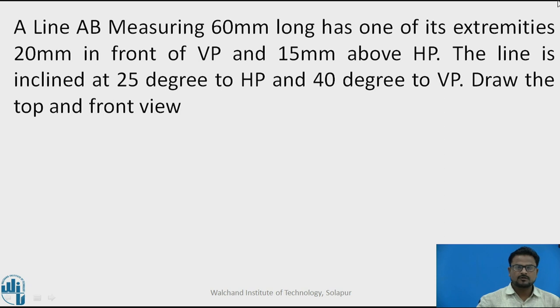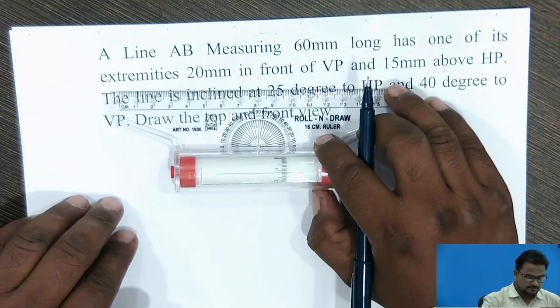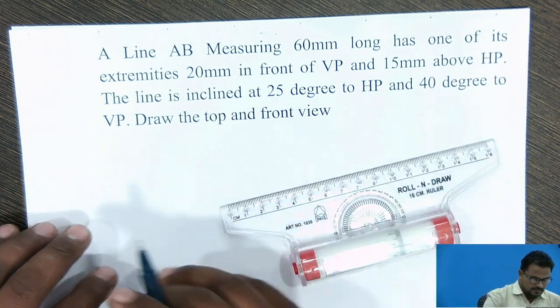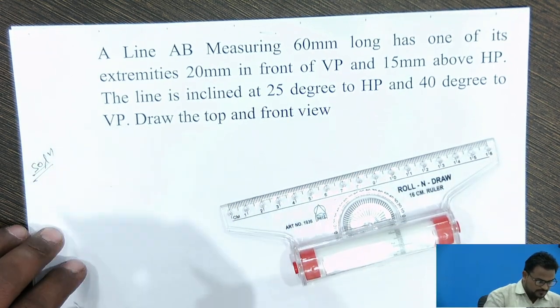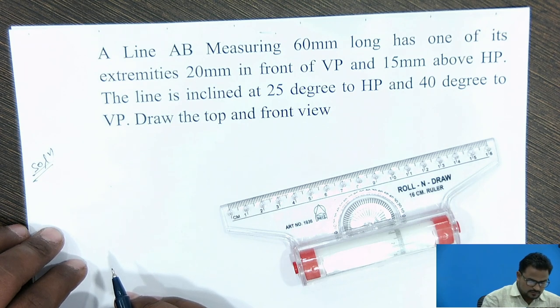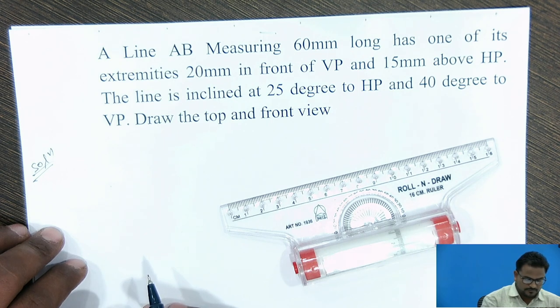So this is the problem. A line AB measuring 60 mm long has one of its extremities 20 mm in front of VP and 15 mm above HP. The line is inclined at 25 degrees to HP and 40 degrees to VP. Draw the top and front view.